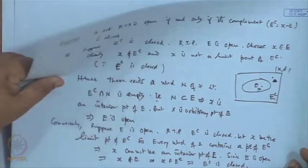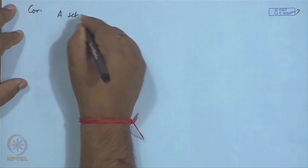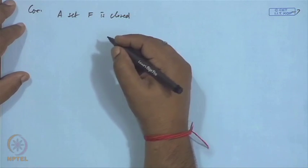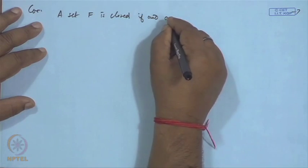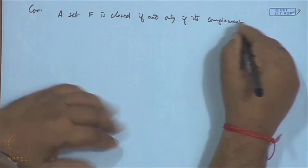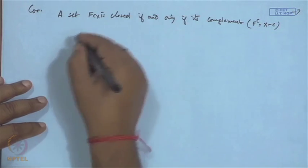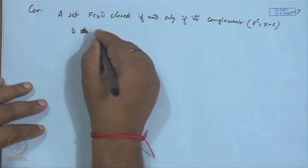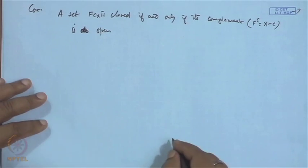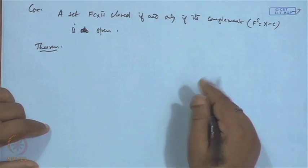As a corollary: a set F is closed if and only if its complement F^c = X \ F is open. This proof follows directly from the previous theorem.